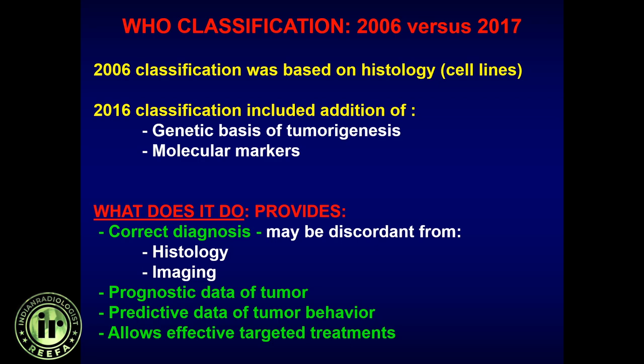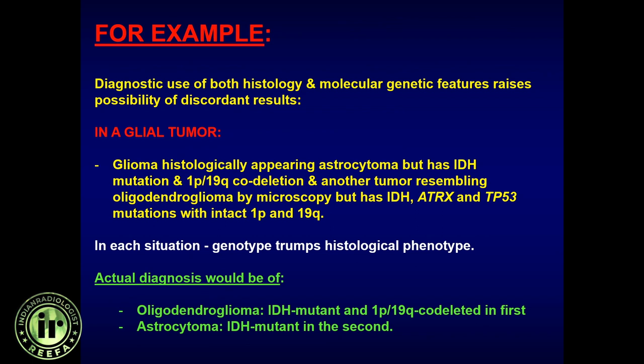The genetic markers help us understand how the tumor will behave, how it will respond to treatments, and whether we can have directed chemotherapy. As an example of how histology and molecular markers may be discordant: a glial tumor appearing histologically as an astrocytoma but with IDH mutation and 1p19q co-deletion would actually be classified as an oligodendroglioma, while a tumor histologically resembling oligodendroglioma but with IDH mutation, ATRX and TP53 mutations, and intact 1p19q would be an astrocytoma. In these cases, genotype trumps histology and can change treatment.